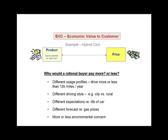Here are a couple of reasons. First, different buyers — while being rational — may have different usage profiles and different driving styles. For example, some people may drive more than 12,000 miles per year, in which case, benefit to the hybrid. Also, hybrids get their major benefit out of city driving, so if a person has a higher proportion of city driving, even at only 12,000 miles, they'd get a greater economic benefit out of a hybrid than somebody who does disproportionately rural driving.